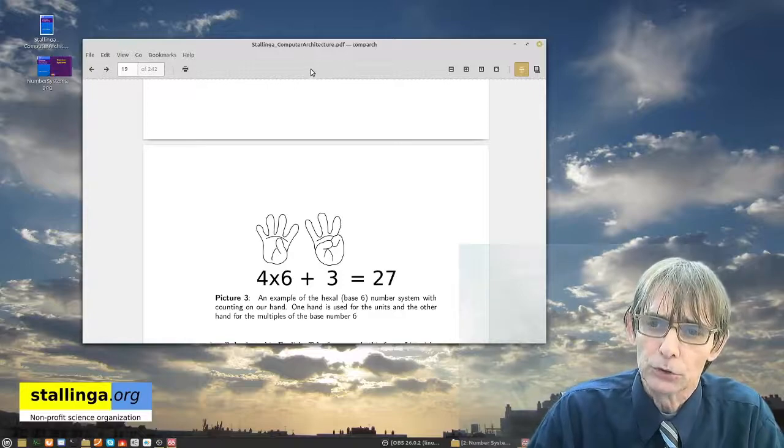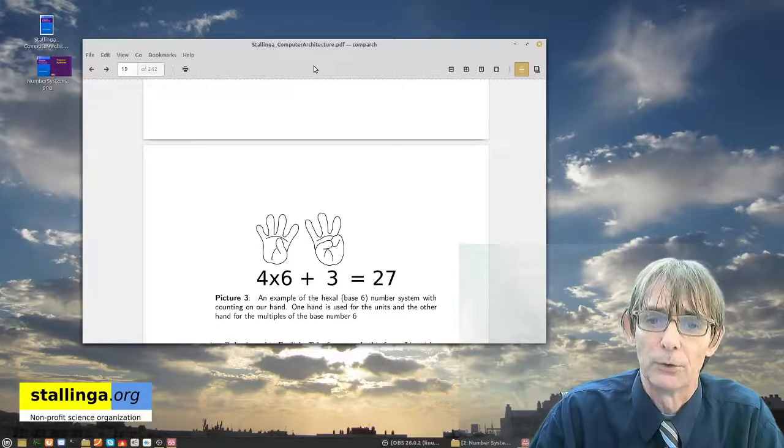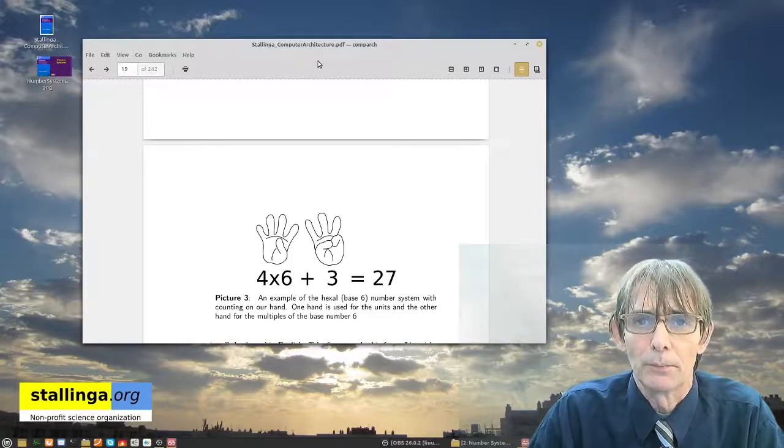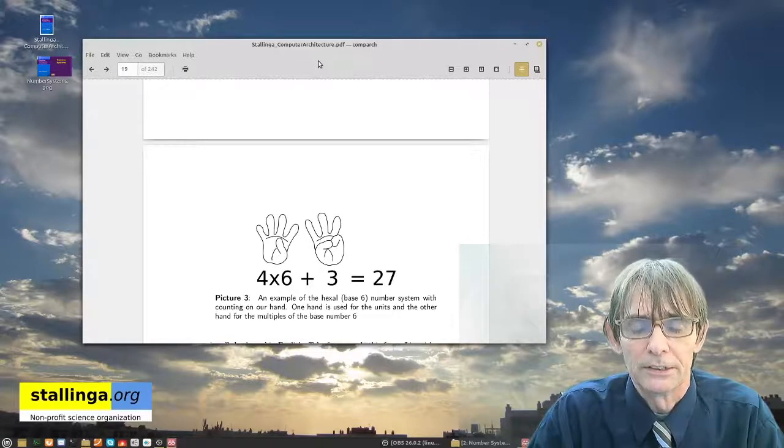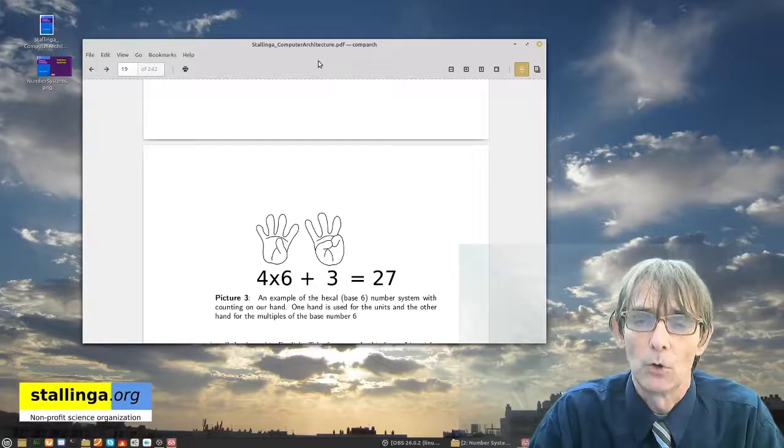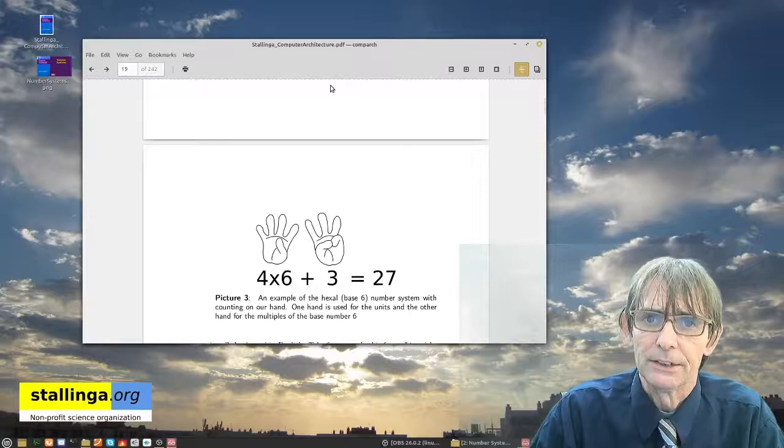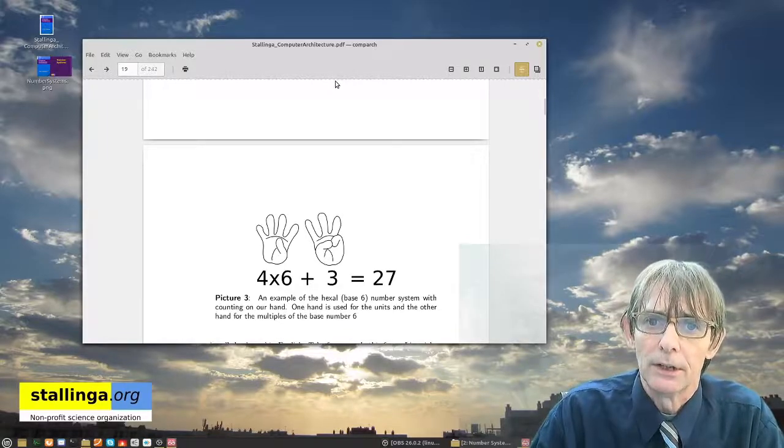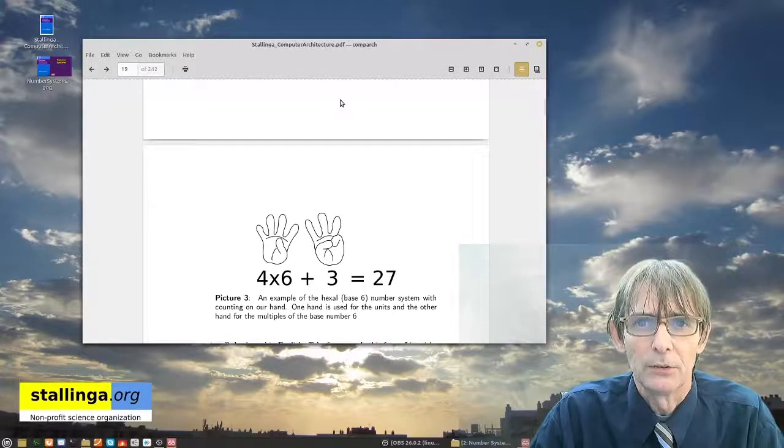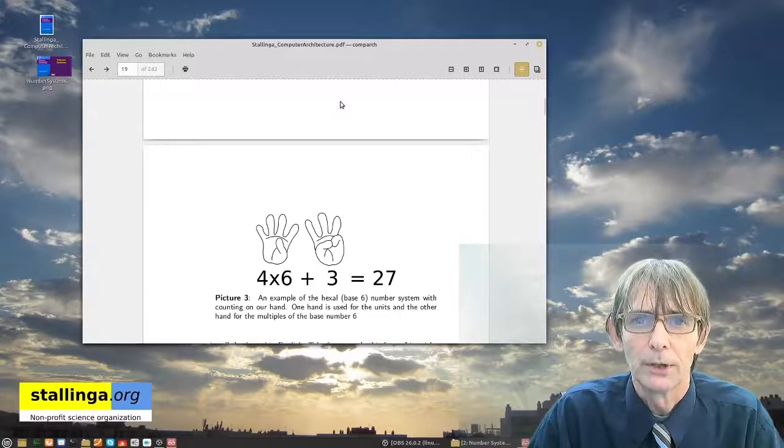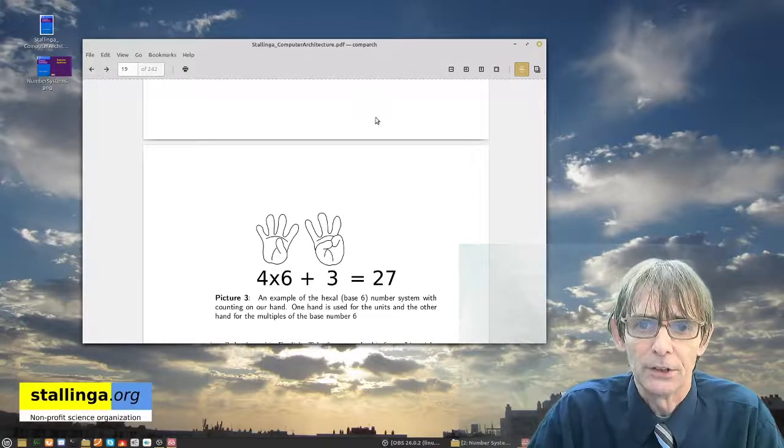So we can actually use any system that we want. Ten is nothing special. It is not even that it is a round number because ten is a round number in any base system. For instance, the number six in the six base system is written as one zero. One times the base, plus zero times the units. So there is nothing special about ten. Six would already be better. But the problem with six is that with small numbers you get a lot of digits. So there should be some kind of balance between the number of digits and the usefulness.